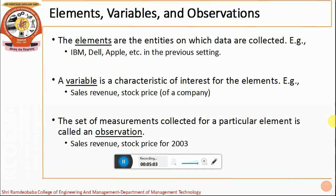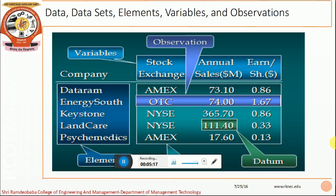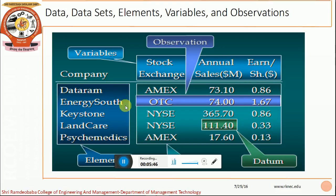The set of measurements collected for a particular element is called an observation. That means the sales revenue and the stock prices collected for a particular year together are called observations. For example, for the OTC stock exchange, the annual sales in millions is 74 and the share holdings is 1.67 — this entire one row is called an observation. Stock exchange, annual sales, and share holdings are the variables considered in our data, while the different companies are called elements.